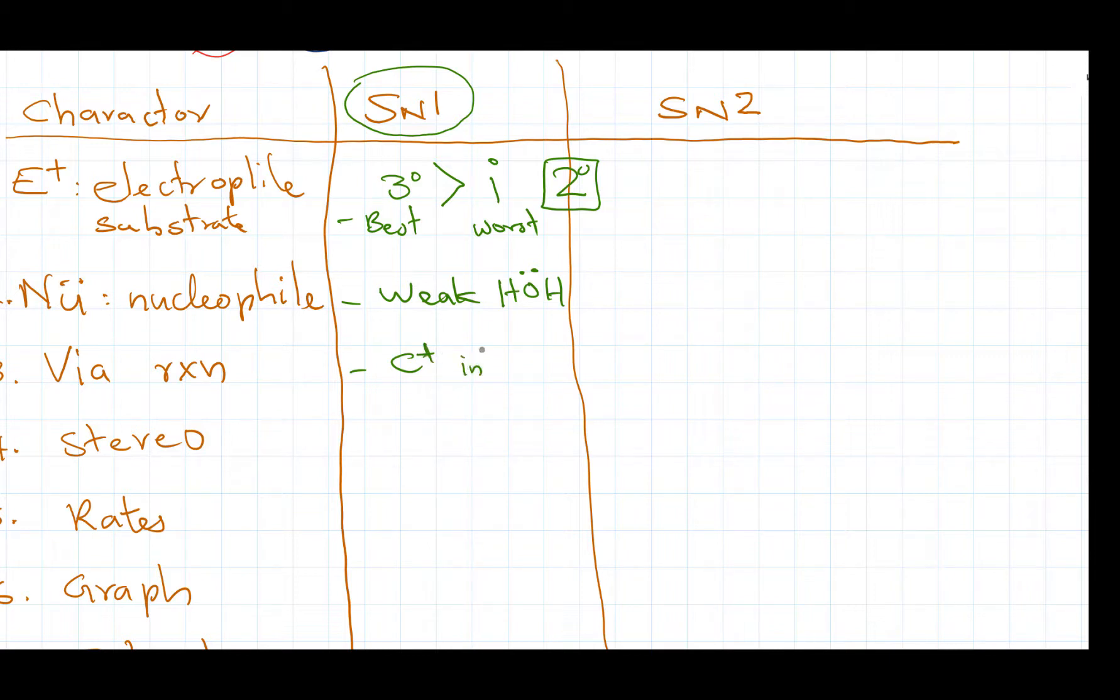So then what type of reaction mechanism? SN1 goes through carbocation intermediate. So that's the one I mentioned, the elephant riding. So the carbocation has another magic, the two,